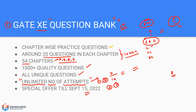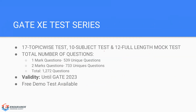Now coming to the GATE XC Test Series, which we launched earlier in April/May. This test series contains 17 topic-wise tests, 10 subject-wise tests, and 12 full-length tests. It is oriented for GATE XC — specifically for XC A, B, D, and E only.